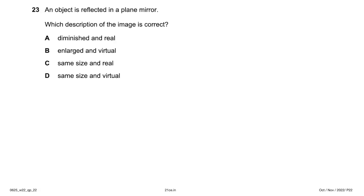An object is reflected in a plane mirror. Which description of the image is correct? The image is the same size and virtual — virtual because it cannot be projected onto a screen. Every day when we look in a plane mirror, we see an image the same size as our face. Answer: option D.